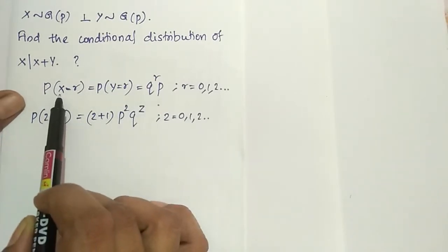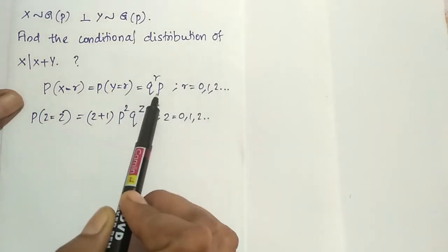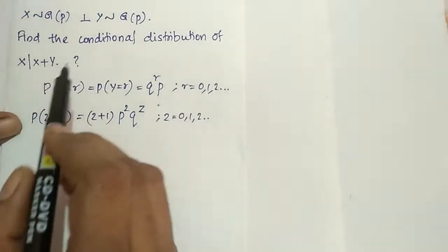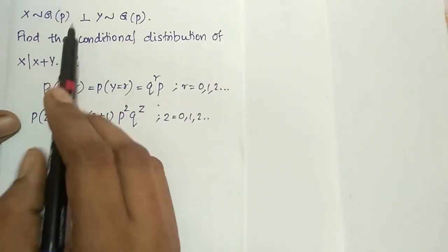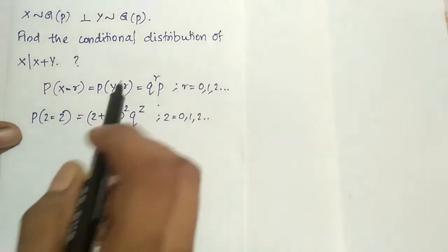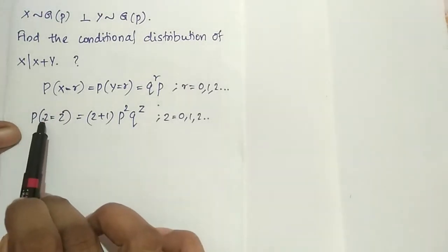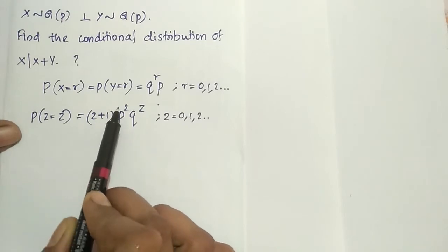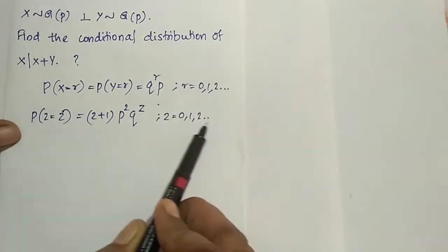The probability X equal to r and Y equal to r are the same: q raised to r times p — that is the geometric PMF. X plus Y equals Z, and the probability Z equal to z will be (z plus 1) times p squared times q to the power z.